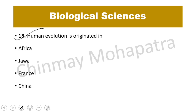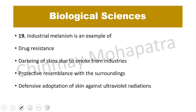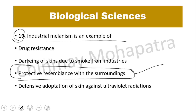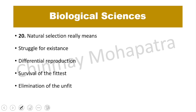Question number 18. Human evolution originated in Africa. Question number 19. Industrial melanism is an example of protective resemblance with the surrounding environment — it is protective resemblance from predators.